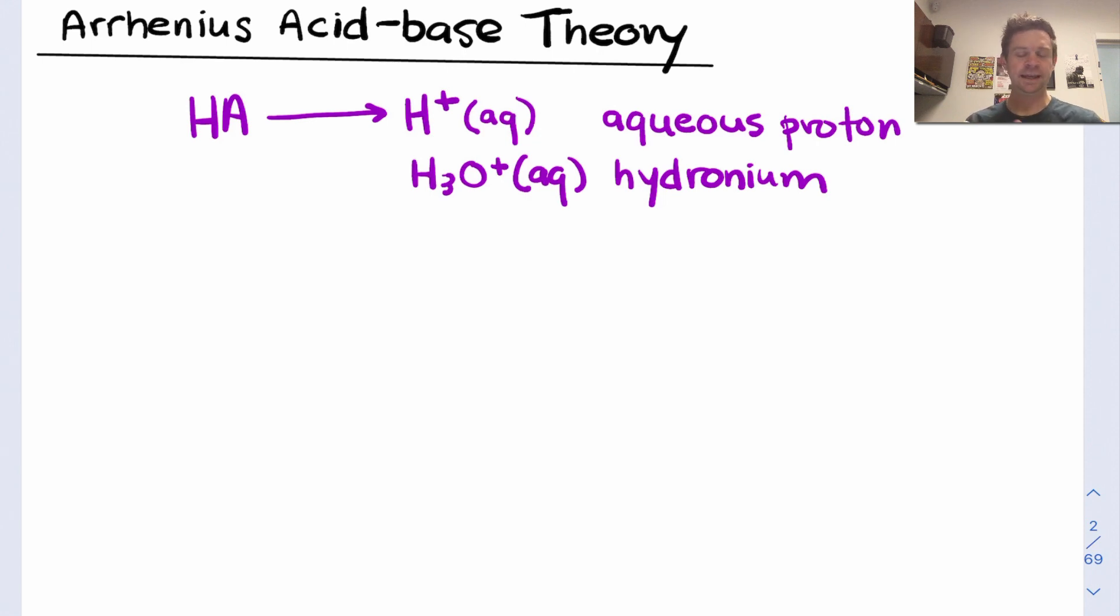An Arrhenius base is a species that increases the concentration of dissolved hydroxide in aqueous solutions. Hydroxide is OH-, and an Arrhenius base, when dissolved in water, increases the concentration of this species.